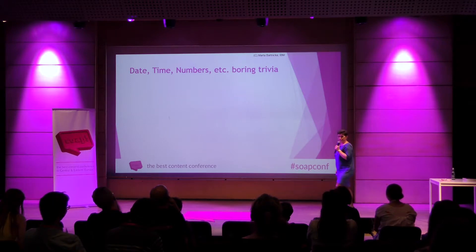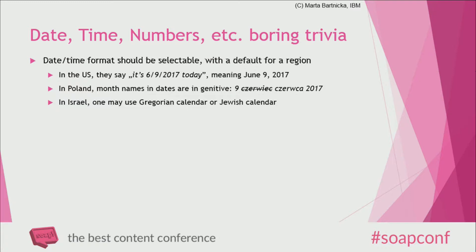The date and time format should be selectable — which is obvious. There must be a proper default for an area, country, or region, and there can be more than one correct date and time format in a given part of the world. The thing we all hate here is the fact that in the U.S. they switch month and day versus us — so 6-9-2017 is the American way of saying today's date. In Poland, month names must have two forms in every calendar — the basic month name, like 'Czerwiec,' and one mandatory genitive form, 'Czerwca,' which applies in dates. It is not possible to use one form to fit both.